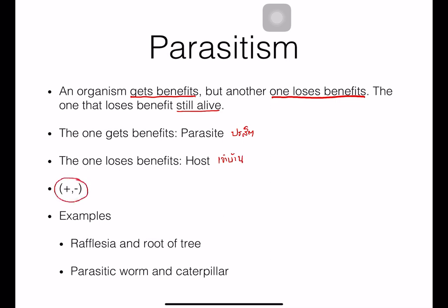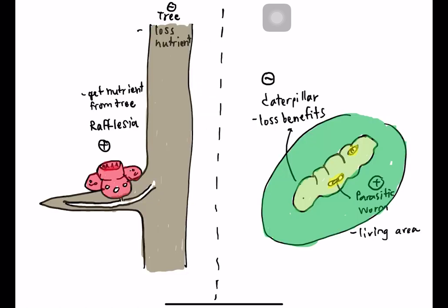The symbol for parasitism is plus and minus. Examples include parasitic flowers such as Rafflesia, the root of a tree, parasitic worms, and caterpillars. Rafflesia takes its root into the tree's root and absorbs nutrients and water from the tree. Rafflesia does not have leaves to perform photosynthesis, so the tree loses the benefit by losing nutrients.